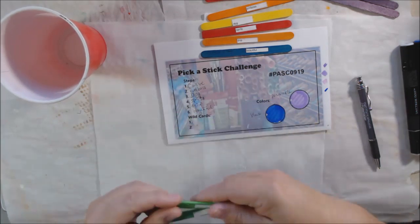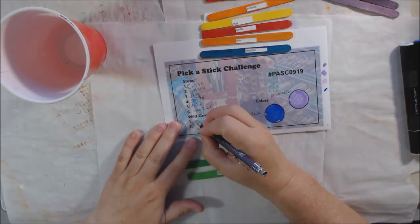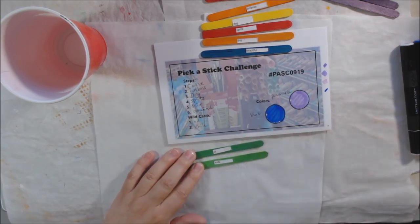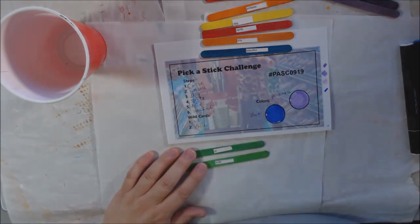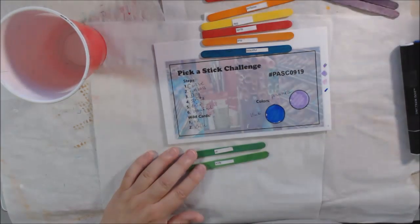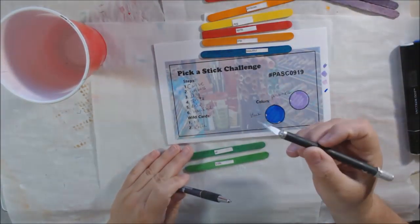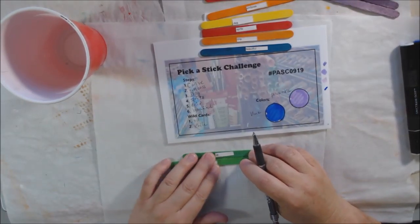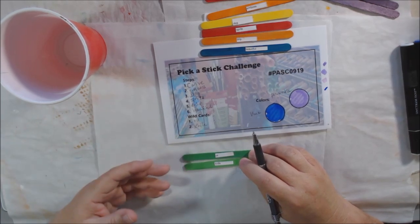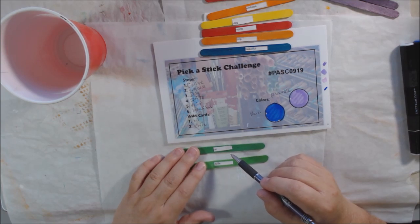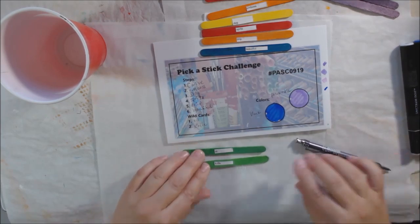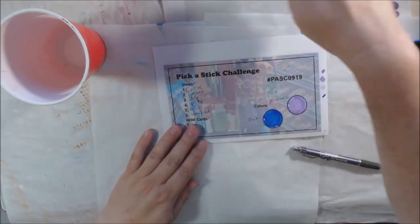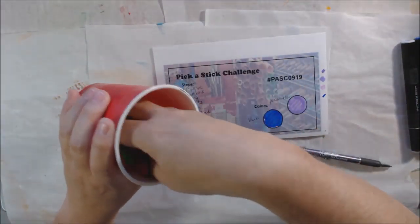So then the wild cards are oil and knife. Knife being cutting something, using a knife for something, spreading or cutting. Could be a palette knife to spread something, or it could be this kind of knife to cut something out. And oil, that could be using baby oil on your gel plate to clean it, that could be using an oil stick or an oil crayon or oil paint. You choose. And those are to replace any of these that you don't like. So that's our art journal page challenge.